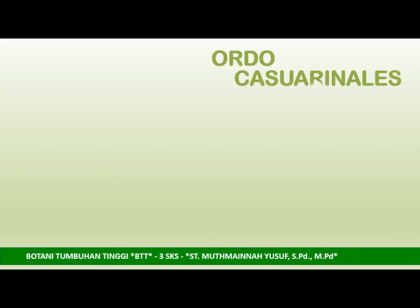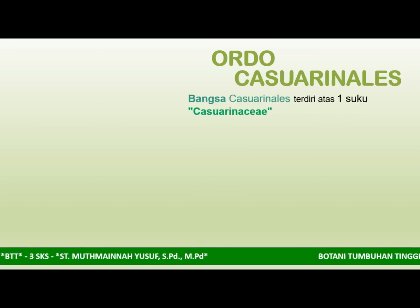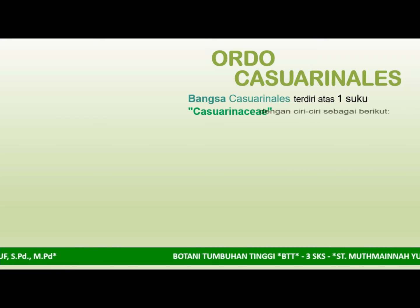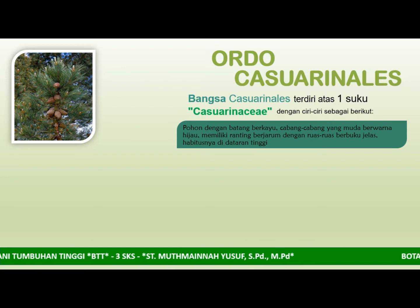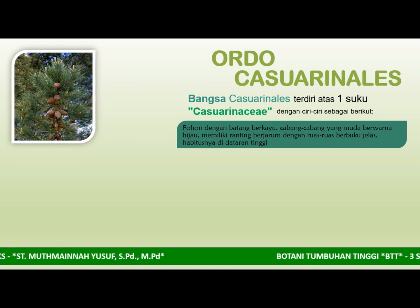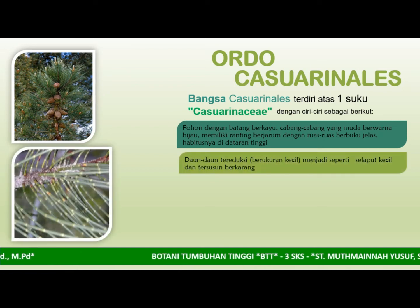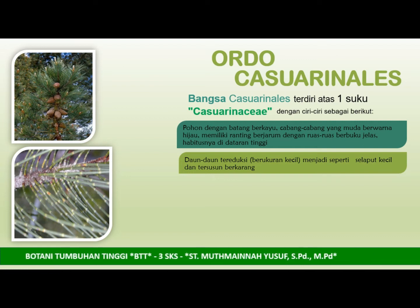Yang pertama kita bahas adalah Ordo Kasuarinales. Bangsa Kasuarinales terdiri dari satu suku yaitu Casuarinaceae dengan ciri-ciri sebagai berikut: pohon dengan batang berkayu, cabang-cabang muda berwarna hijau, memiliki ranting berjarum dengan ruas-ruas berbuku jelas, habitusnya ada di dataran. Daun-daun tereduksi berukuran kecil menjadi seperti selaput kecil dan tersusun berkarang.